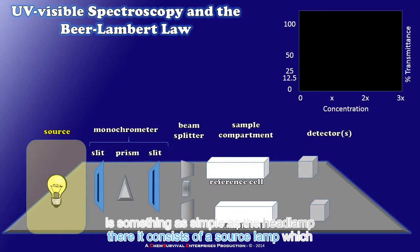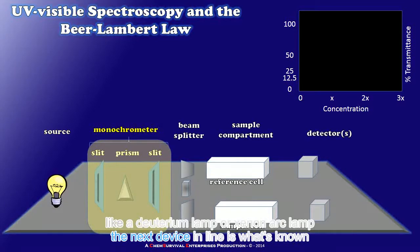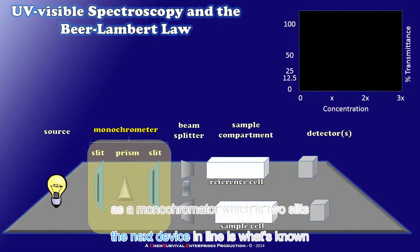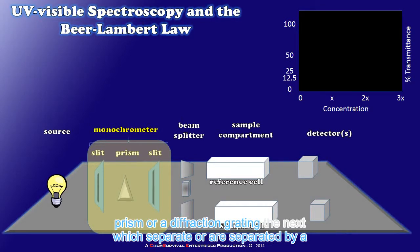It consists of a source lamp which is something as simple as the headlamp from a motor scooter or more complicated like a deuterium lamp or xenon arc lamp. The next device in line is what's known as a monochrometer which is two slits separated by a prism or a diffraction grating.